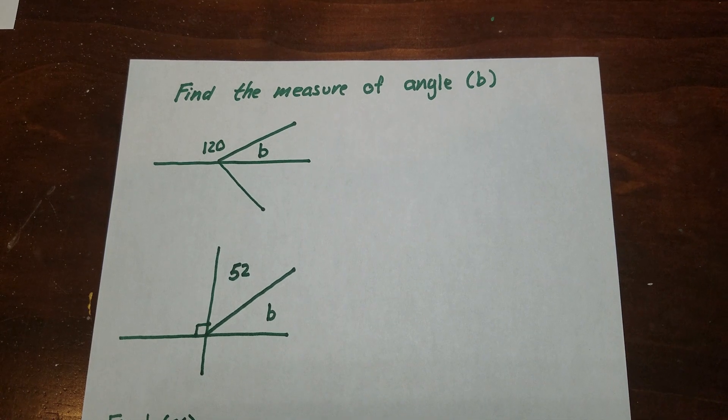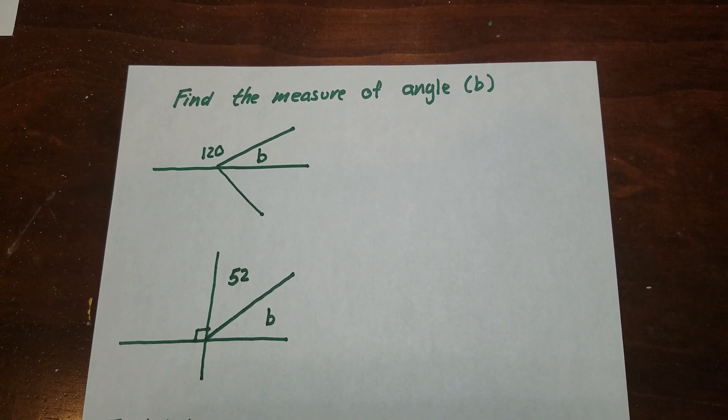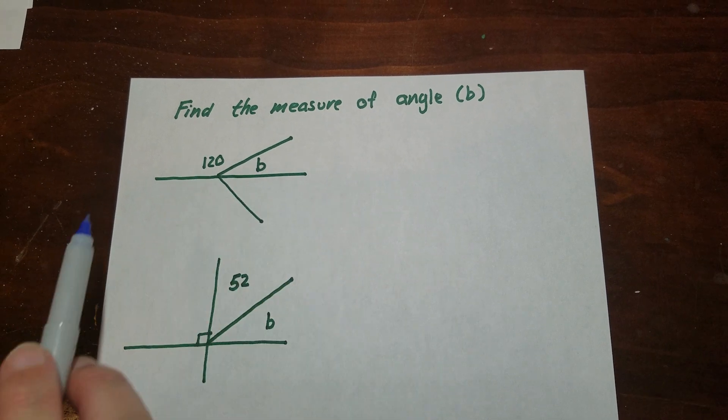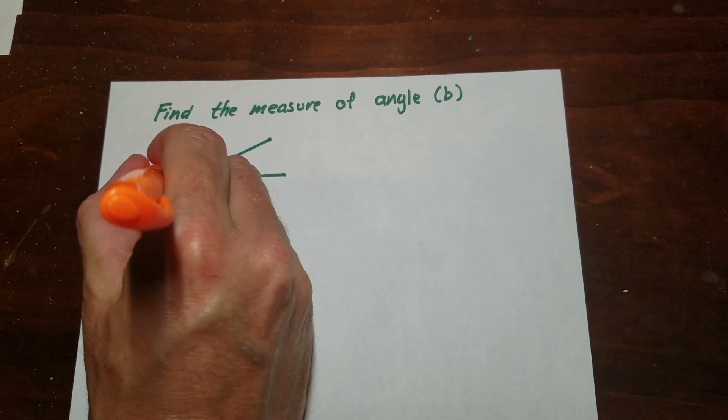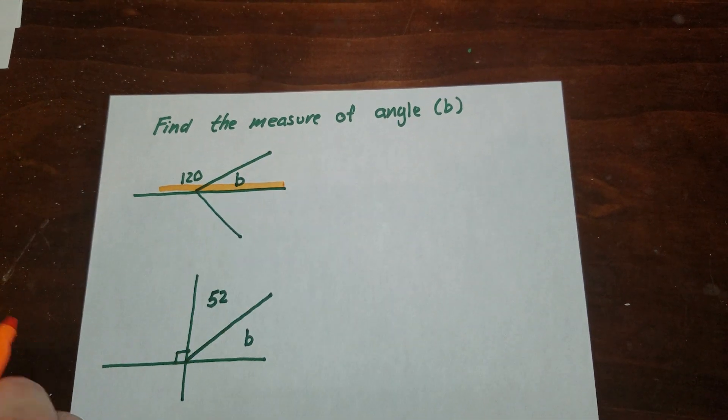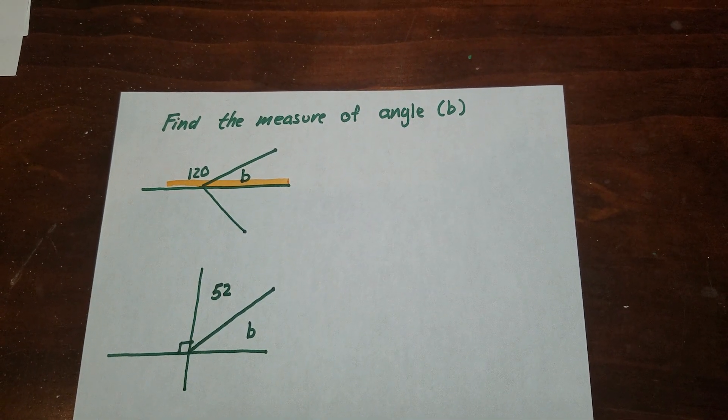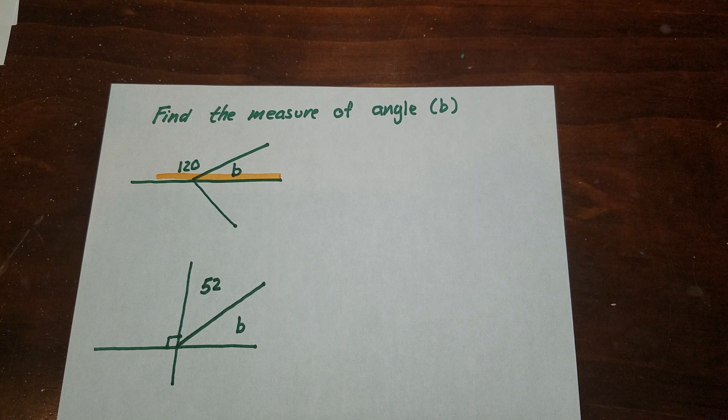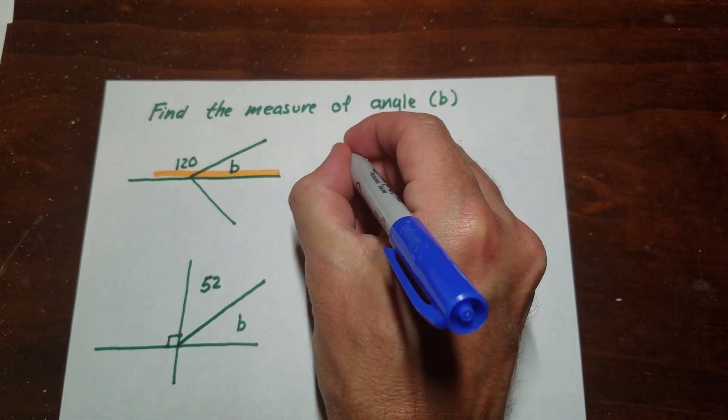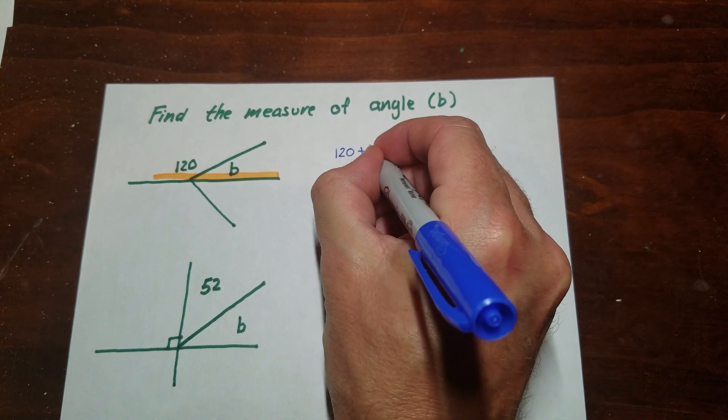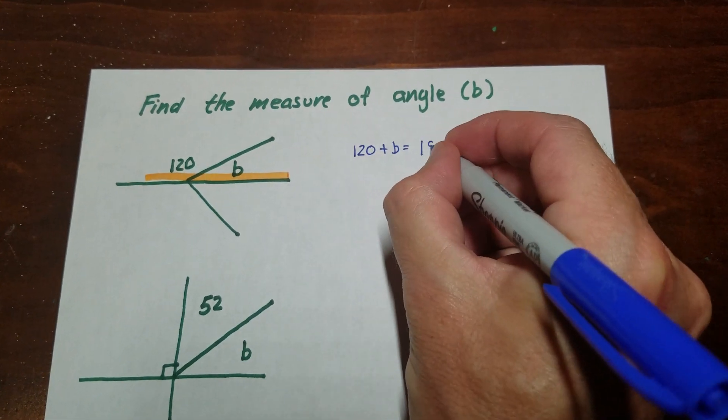So we're going to do a little bit of that today. So this is find the measure of angle B. So I'm looking for this angle. Now, if I look at this picture here, I can tell that these two angles are on a straight line. So that's telling me that this is a linear pair type situation, which means that they're supplementary. So I can set up an equation then that they equal 180 degrees.